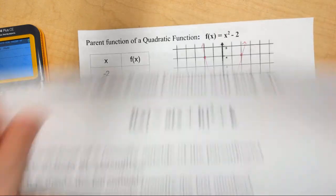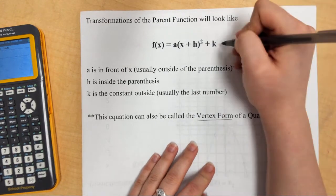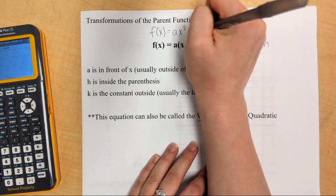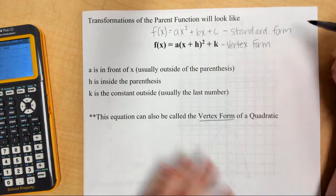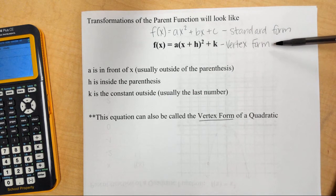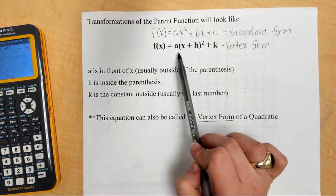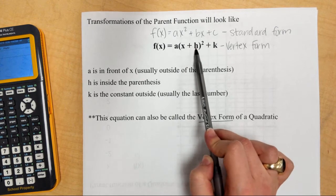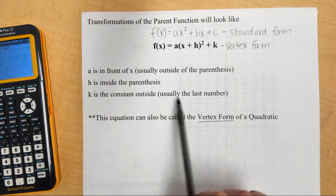Before we get started, this is another form of a quadratic — we call it vertex form. We already have our standard form: f of x equals ax squared plus bx plus c. Vertex form is another way to write it. I still have an x squared in it, but I have this a number in front, this h which is added or subtracted inside the parentheses, and the k which is a constant outside the parentheses.